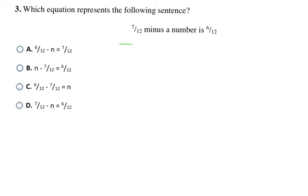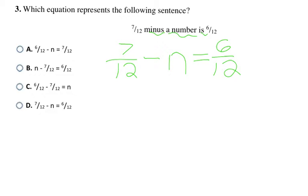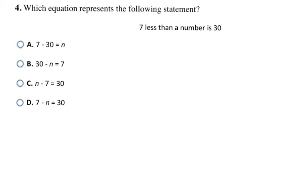Which equation represents the following sentence? I'm going to take it piece by piece: 7/12 minus a number equals 6/12. So 7/12 is 7/12, minus is a subtraction symbol, a number is n, 'is' is an equal sign, and 6/12 stays 6/12. My final answer here is D.